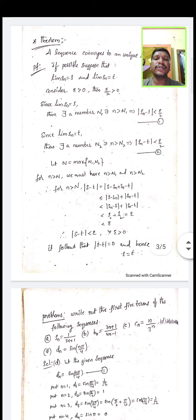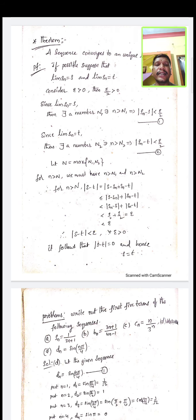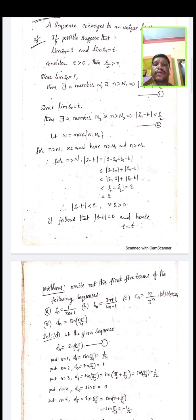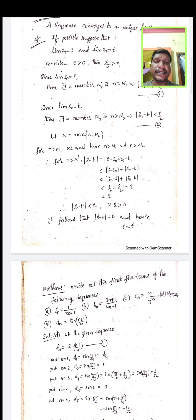From equations 1 and 2, let capital N = max(N₁, N₂). For n greater than capital N, we must have n > N₁ and n > N₂. Therefore, for n > N, we consider |S - T|, which can be written as |S - S_n + S_n - T|.